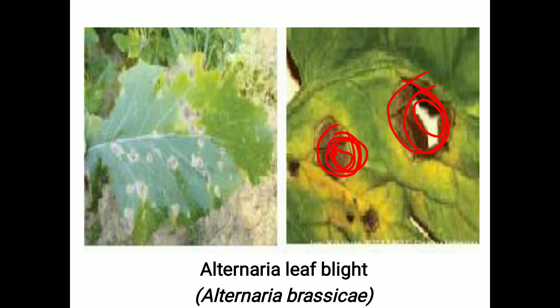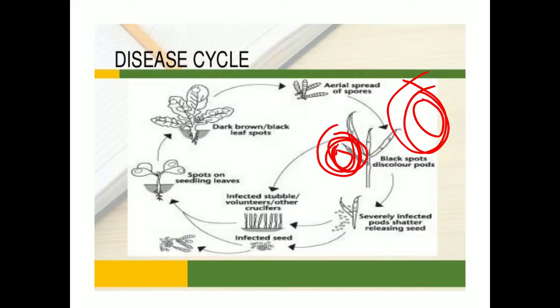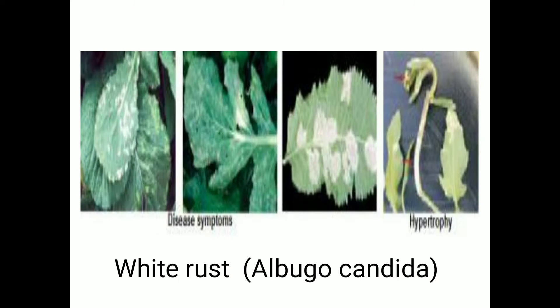Regarding perpetuation, the primary source of infection is plant debris and seeds, and the secondary source is airborne conidia. For management, we can do hot water treatment of seeds at 50°C for 30 minutes to eradicate the fungus on seeds. We also follow crop rotation by avoiding cruciferous crops and eradicating susceptible weeds. If infestation is severe, spray copper oxychloride (COC) at 0.5 to 0.75 percent or Zineb at 0.25 percent.